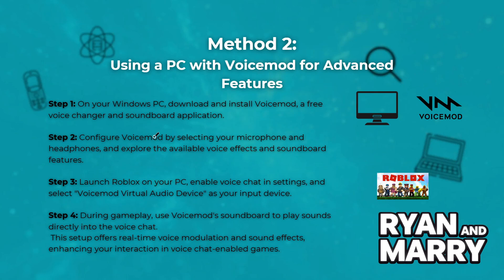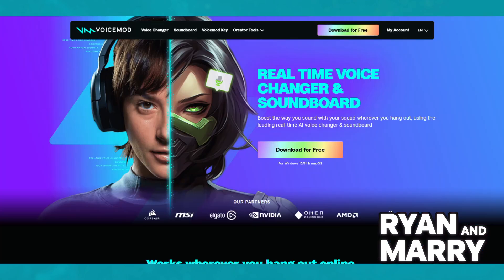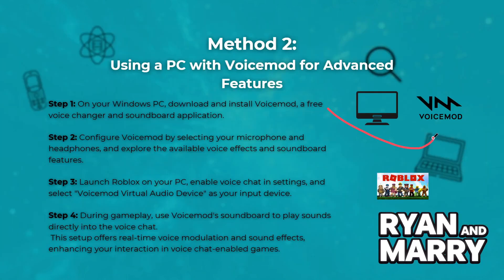On your Windows PC, download and install Voice Mode, a free voice exchanger and soundboard application. Step 2: Configure Voice Mode by selecting your microphone and headphones, and explore the available voice effects and soundboard features. Step 3: Launch Roblox on your PC, enable voice chat in settings, and select Voice Mode virtual audio device as your input device.